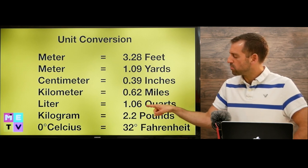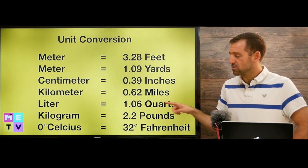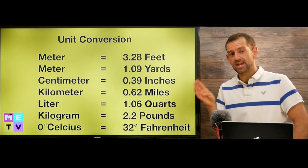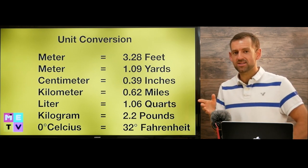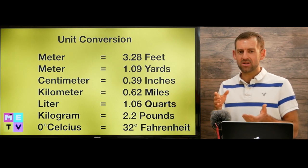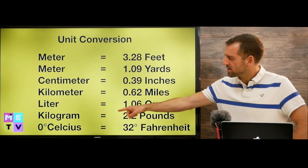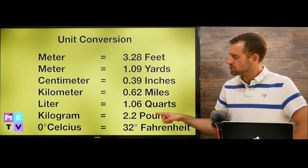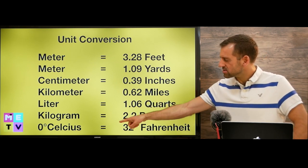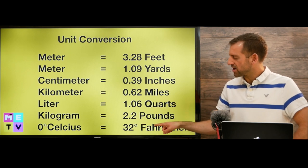A centimeter is equal to 0.39 inches, a kilometer is 0.62 miles, a liter is 1.6 quarts. Now there's four quarts in a gallon. And in the U.S., most people buy their milk in a gallon jug. So it's about four liters. One kilogram is equal to 2.2 pounds. Zero Celsius is 32 Fahrenheit.